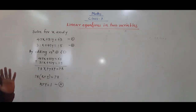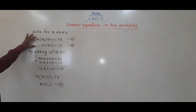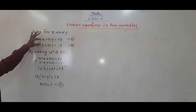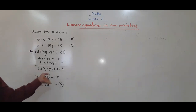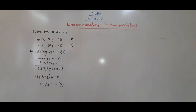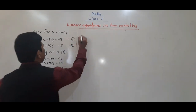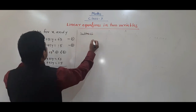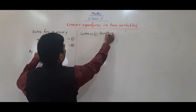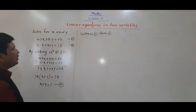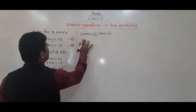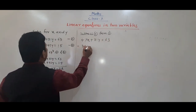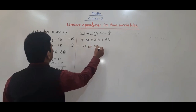Now we subtract the second equation from the first. So: 47x + 31y = 63 minus (31x + 47y = 50). With the minus sign, 47 minus 31 gives 16x, and 31 minus 47 with a sign change gives minus 16y, equal to 63 minus 50 which is 13. Wait — let me correct: 16x - 16y = 13.